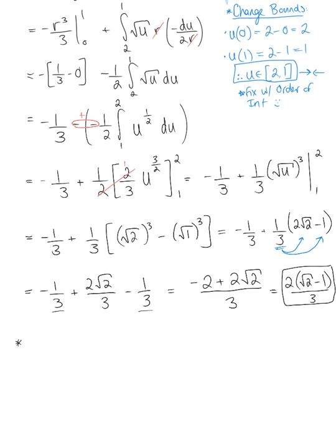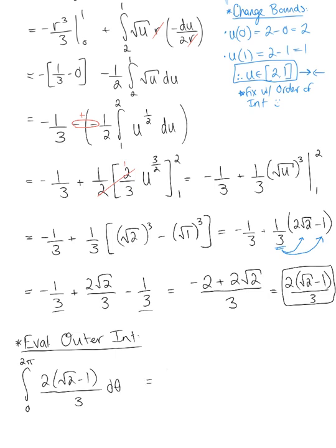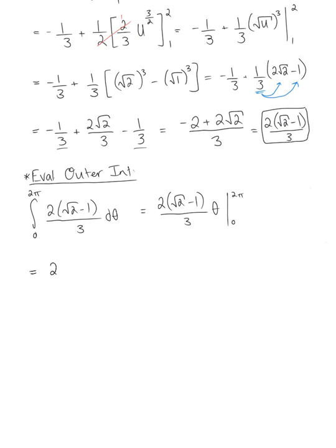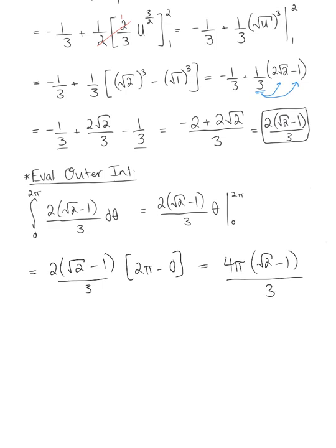Finally, evaluating the outer integral with respect to θ: ∫ from 0 to 2π of (2(√2 − 1)/3) dθ. Since this is a constant, the antiderivative is (2(√2 − 1)/3) · θ evaluated from 0 to 2π, giving (2(√2 − 1)/3) · 2π. Our beautiful final answer is 4π(√2 − 1)/3 cubic units — the volume of the ice cream cone-shaped solid region.